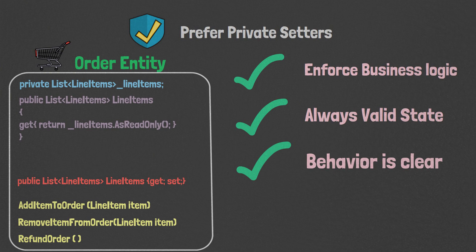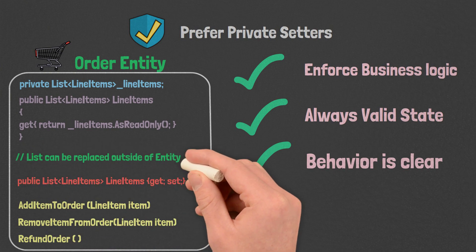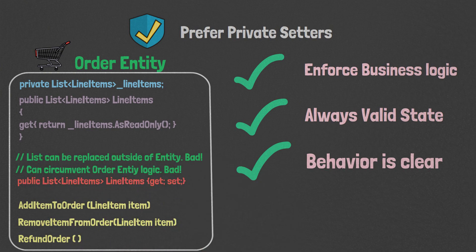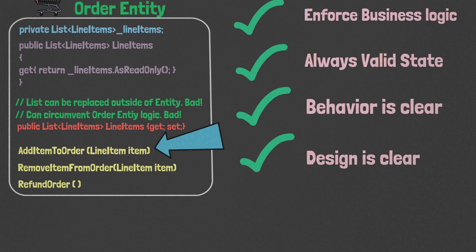If we allow public setters, the entity can change at any time for any reason and can circumvent our business logic and invariants. We'll lose control over the lifecycle of the entity and it can easily enter an invalid state. Using public methods with private setters makes our code more descriptive. It communicates the design decisions and behavior within our domain, and makes the dependencies needed to properly update our entity known through the parameters of the methods.